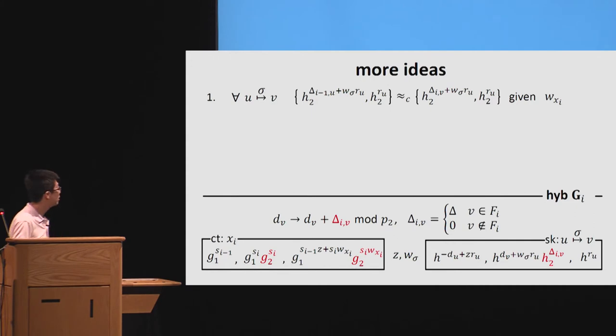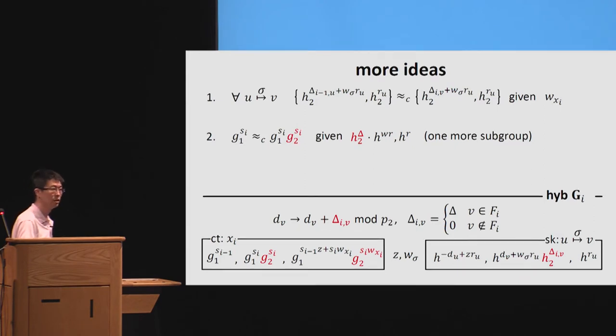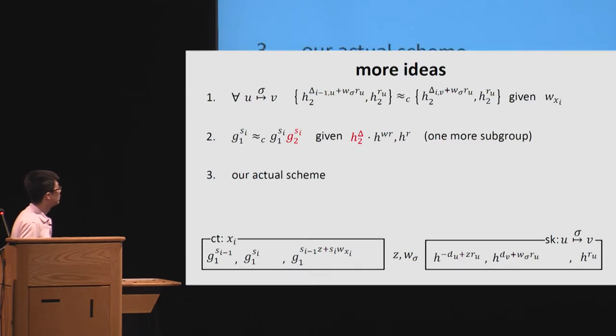Actually, we have more idea to carry out the actual proof because we still need to change the ciphertext. So we have more idea like this. It's a subgroup hiding. But it's enhanced by giving something like this, but hidden in the Elgamal-type encryption. And we also need one more subgroup to realize such kind of tools.